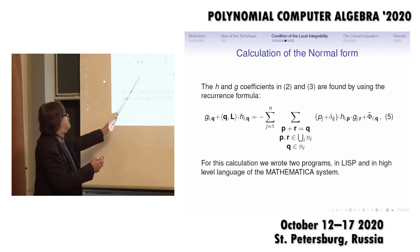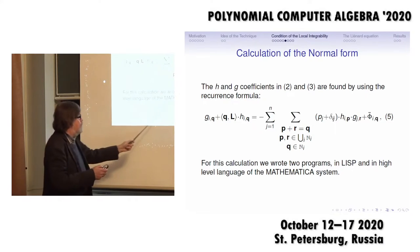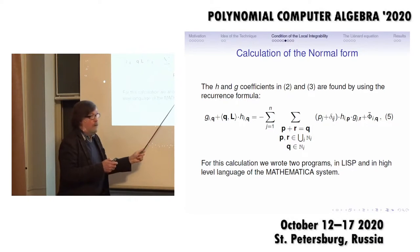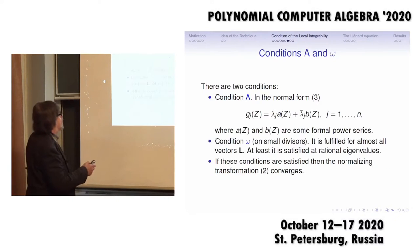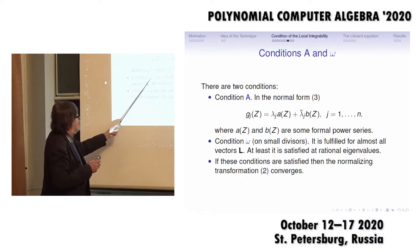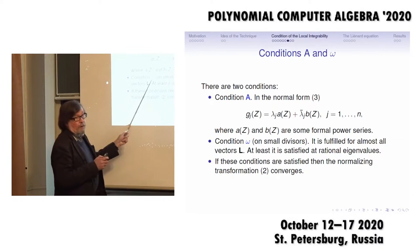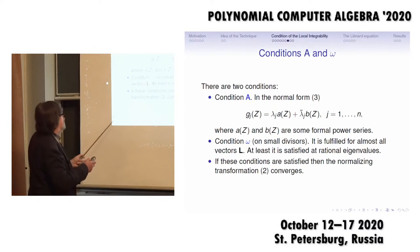In the interesting case, coefficients can be calculated and transformation to normal form by this formula, and we have two programs, one in LISP and one in Mathematica, for realization. But normal form is a very useful thing. In particular, there is condition A.